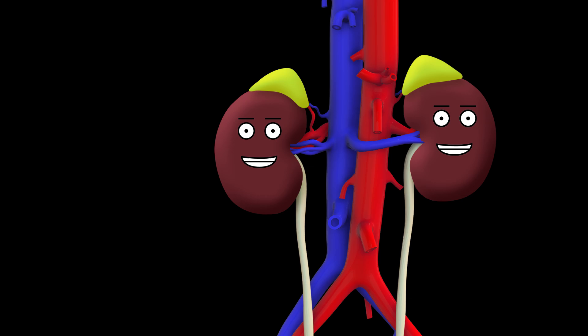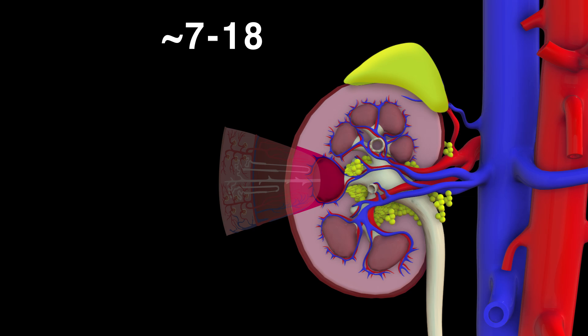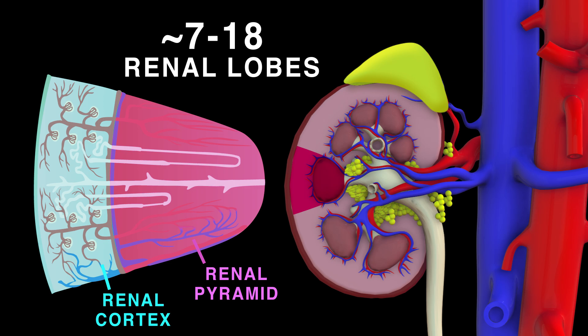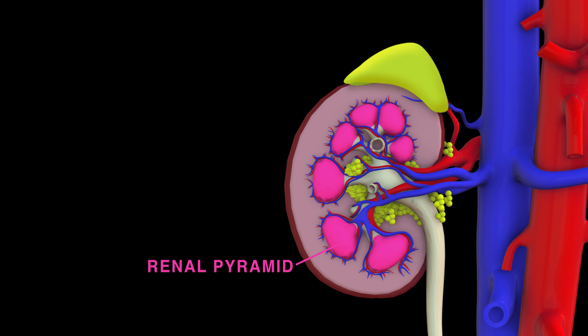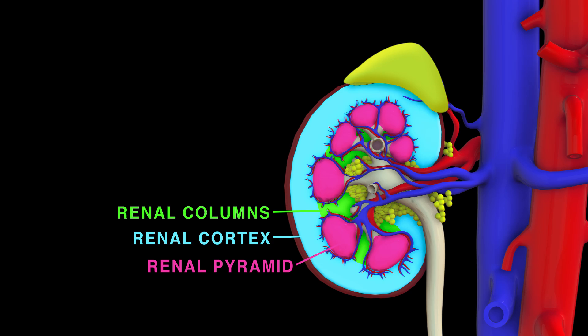An adult kidney typically will enclose around 7 to 18 cone-shaped renal lobes. Each with renal cortex surrounding a renal pyramid, which is a portion of the renal medulla, remember kid. Between pyramids are renal columns, medullary extensions of the renal cortex, which is anchored through these suspensions.